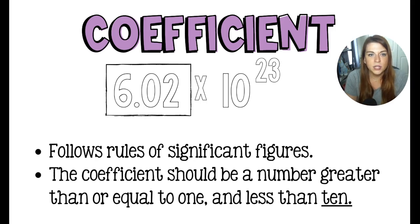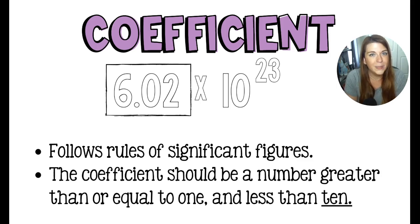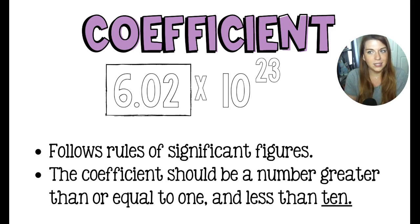Breaking down scientific notation: the numbers out in front of the times 10 to the — that's called the coefficient. That coefficient follows the rules for significant figures. So 6.02 times 10 to the 23rd as written has three significant figures: the six, the zero, and the two. The coefficient should be a number that's greater than or equal to one but less than 10. A lot of kids would write 602 times 10 to the 21st — that's kind of what you pick up from math class. In science, we like our scientific notation to be between one and 10 whenever we can.